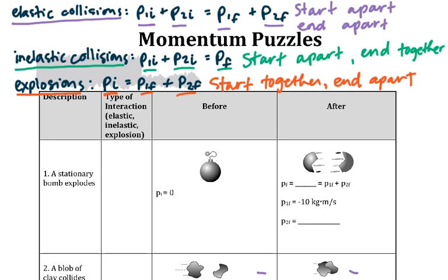Okay, so stationary bomb explodes, and we see in the picture we've got a bomb in the before column here that starts together, and then is separate afterwards.